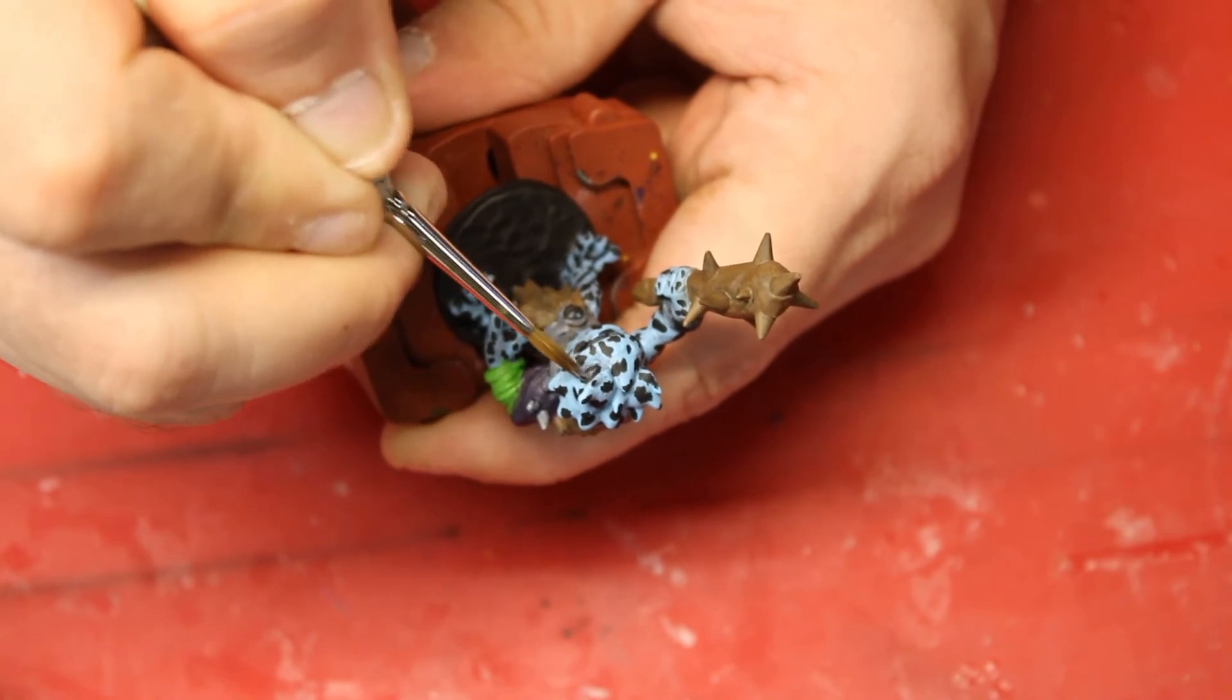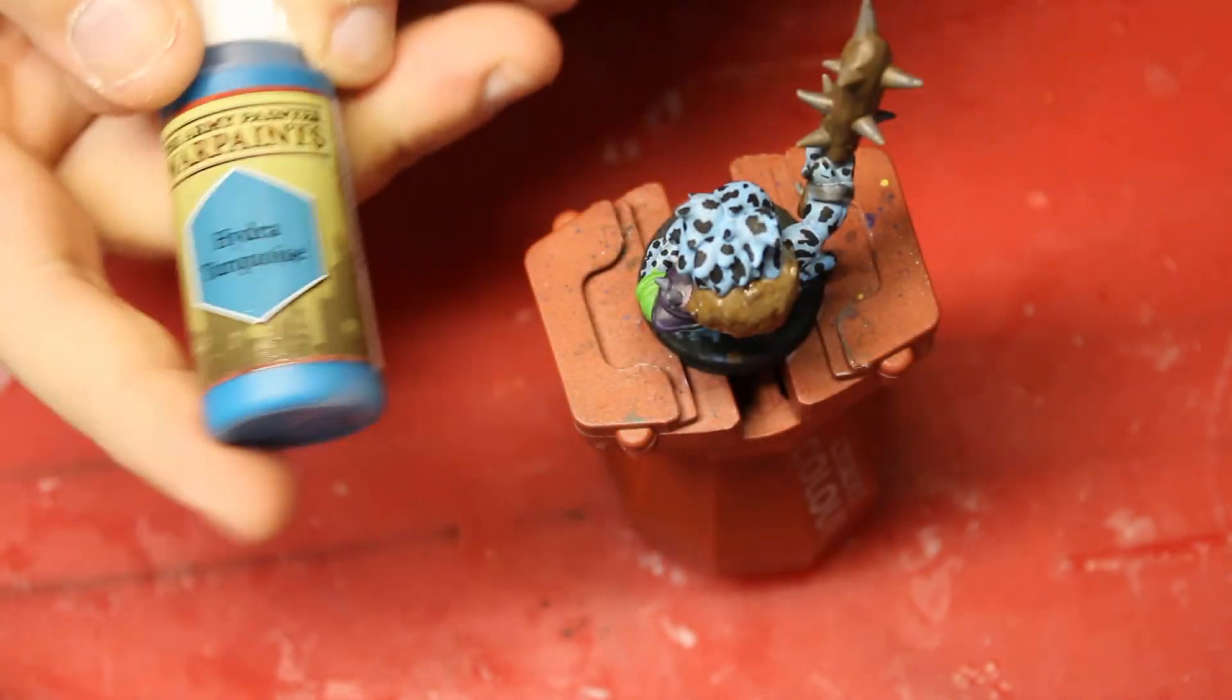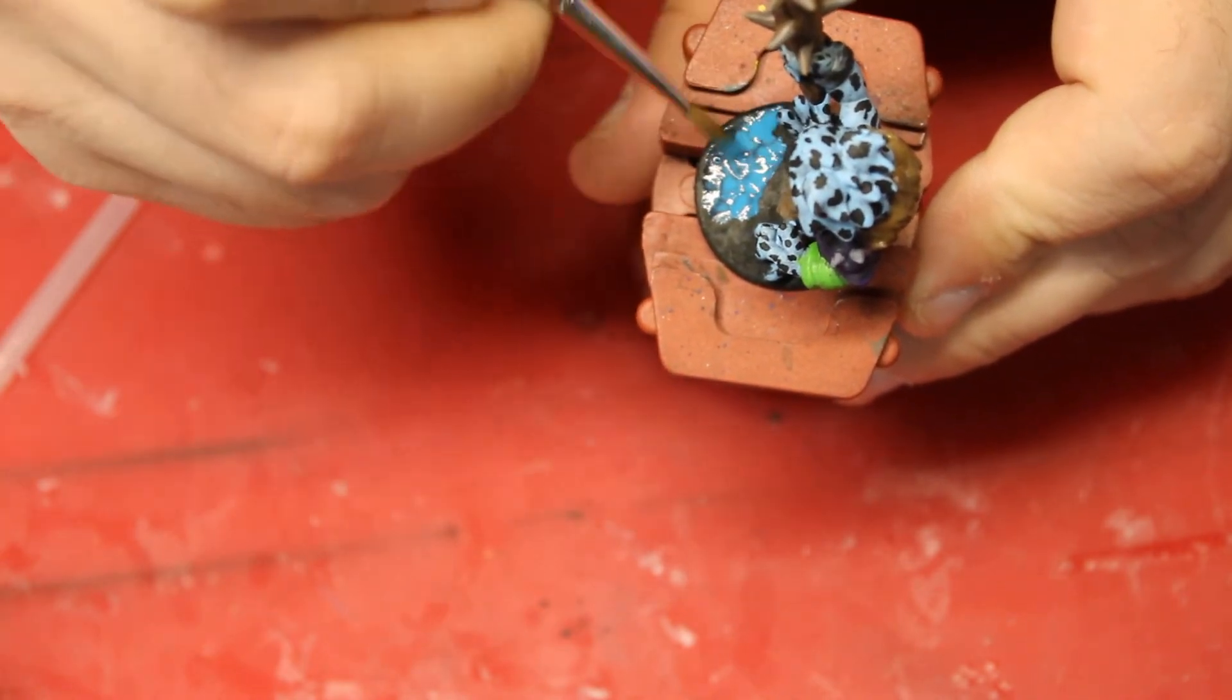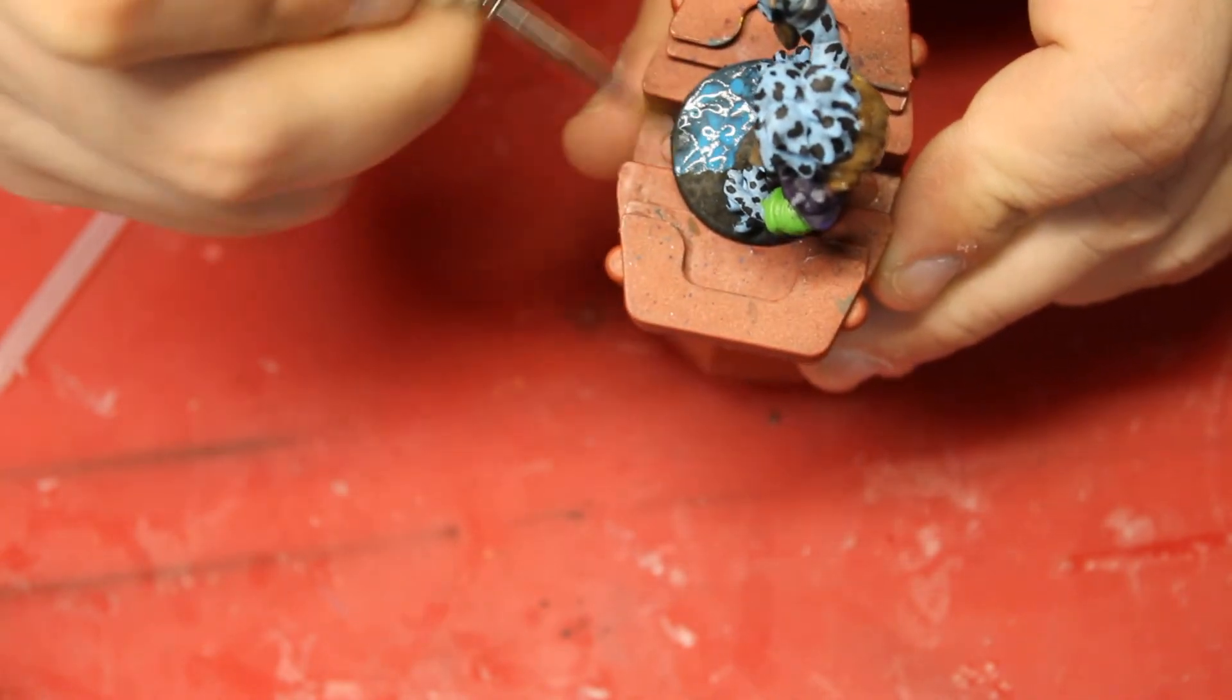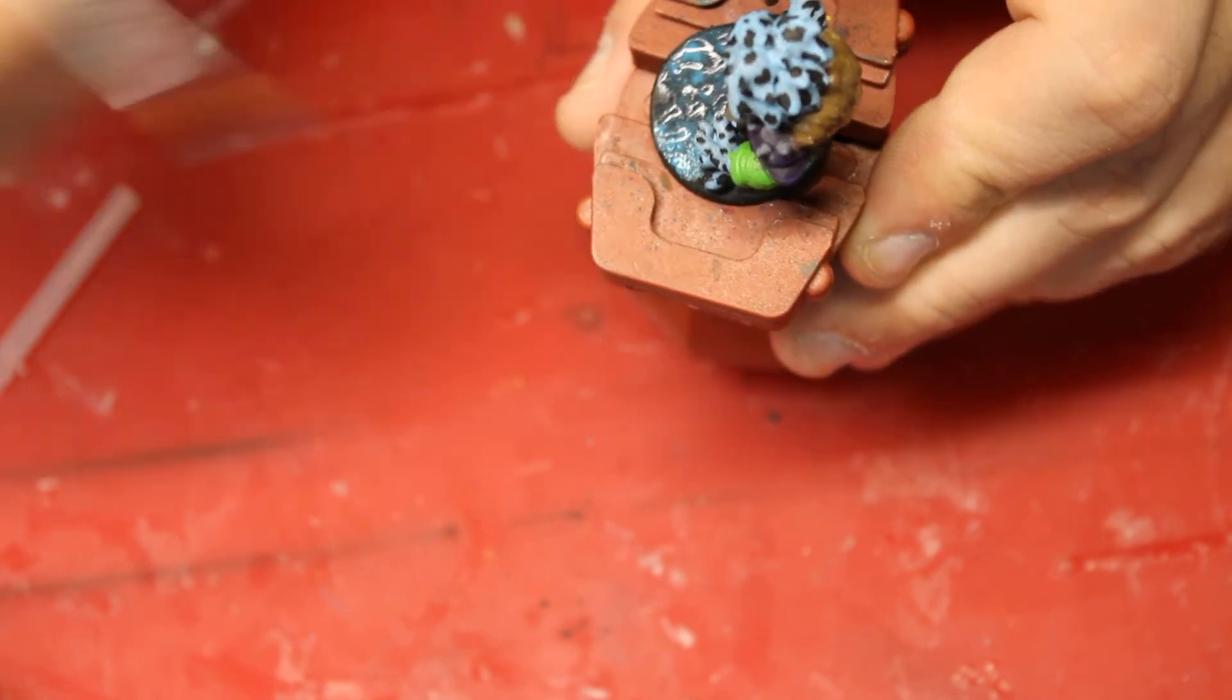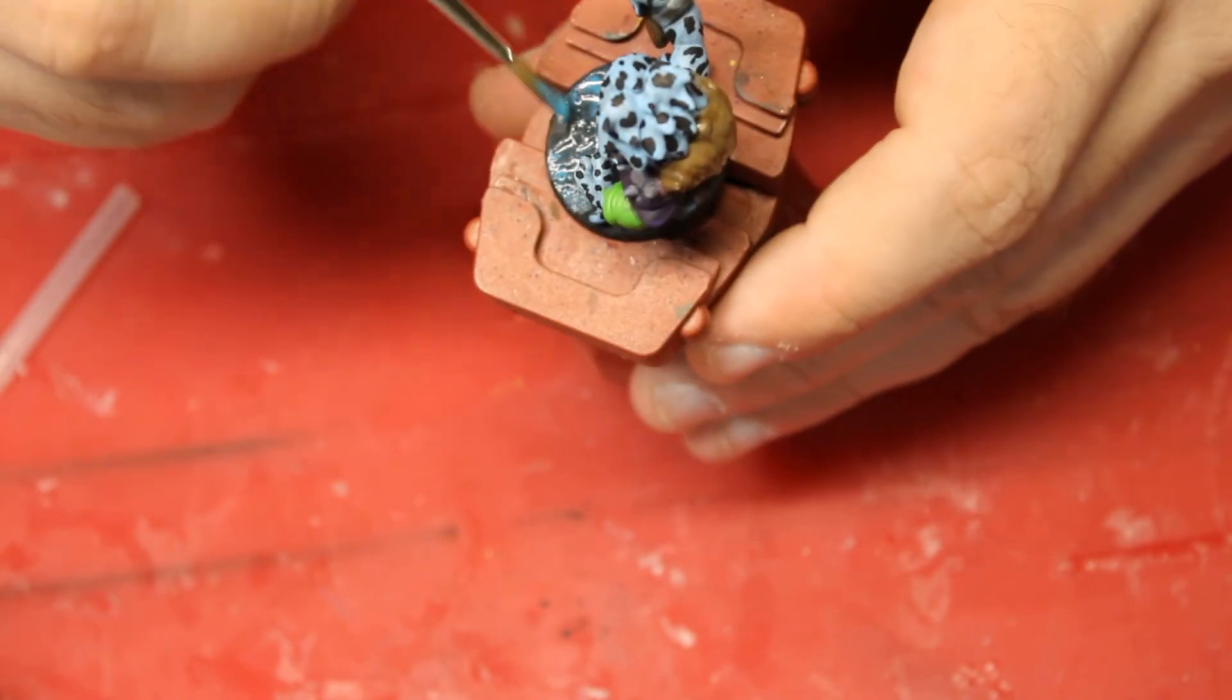I then come in with some Hydra Turquoise to go ahead and do the base and make it look swampy and muddy. After I do the Hydra Turquoise all around the bottom of the base, I do come back with a dry brush and hit some brown on the tops to kind of make it look like muddy water.